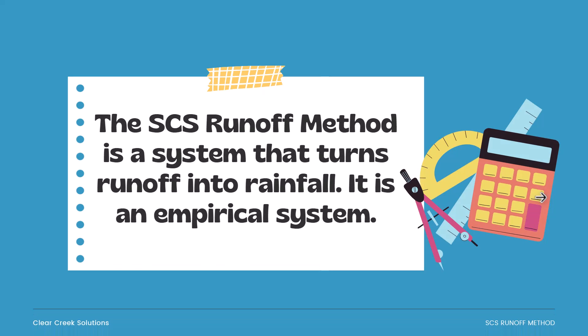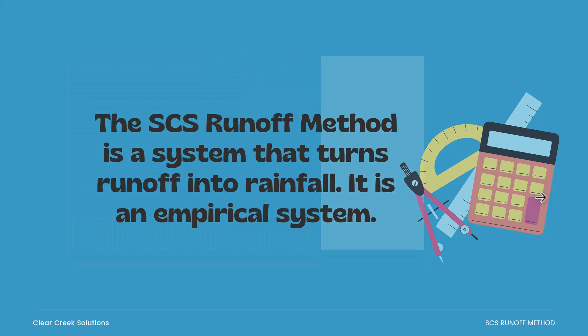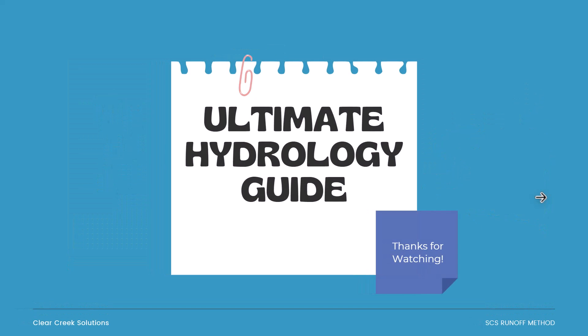The SCS runoff method is an empirical system that relates runoff to rainfall using those equations. If you're curious about different forms of hydrology — such as continuous simulation, which is what our stormwater model uses, or single event hydrology like the SCS runoff method, and comparisons of other methods — you can download our ultimate hydrology guide in the description box for free. Please like and subscribe to the channel, and we'll see you next time.